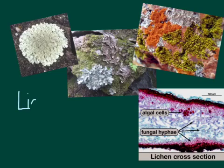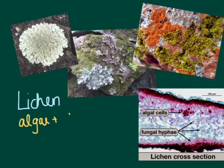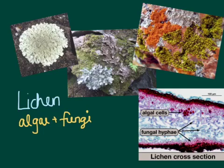Lichen, that pioneer species we see in primary succession, is actually made up of two different organisms living in a mutualistic relationship — meaning both benefit — between algae and fungi. The algae cells, because they are photosynthetic protists, are able to provide food through photosynthesis, and the fungi as decomposers are able to break down material and essentially break down the rock to provide nutrients for the algae. That's why it's a symbiotic relationship, as we can see in this microscopic image of a cross-section of lichen, showing both the algae cells and the fungal hyphae.